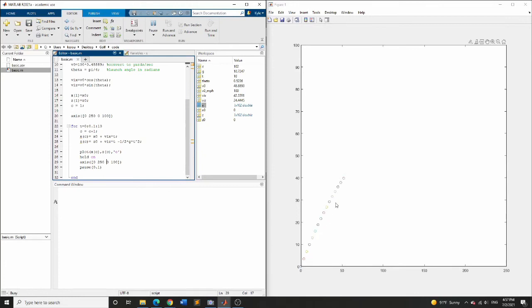So on the right, you see we're getting these circles, which represent the golf ball at different points in time. So you see this is its maximum height, somewhere around 55 yards, and it goes out to a distance somewhere, I'd say, maybe 220.